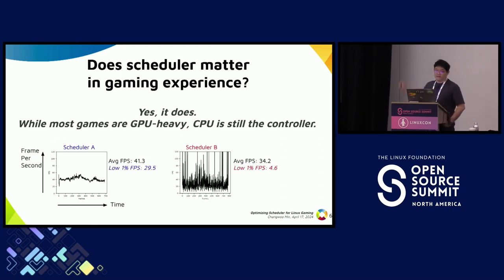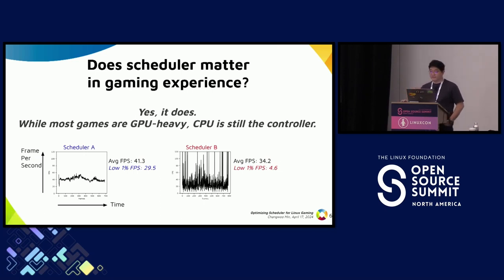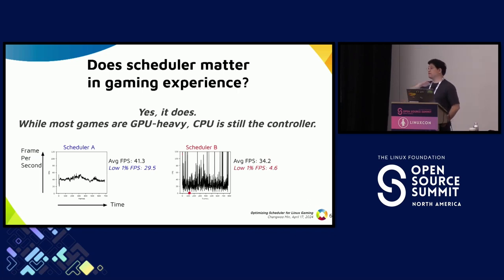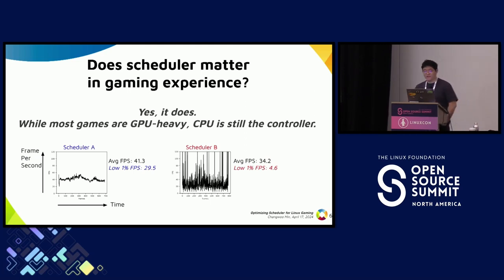This graph shows the same game run with two different schedulers, presenting frame-per-second over time. With scheduler A, the FPS is relatively consistent — gaming experience is relatively good. But with scheduler B, at some point FPS shoots up to 120, and the very next moment drops to five FPS. The gaming experience is really poor because the user suffers from micro-pauses that really strain your eyes. So does the scheduler matter in gaming experience? Yes, it really seriously does.